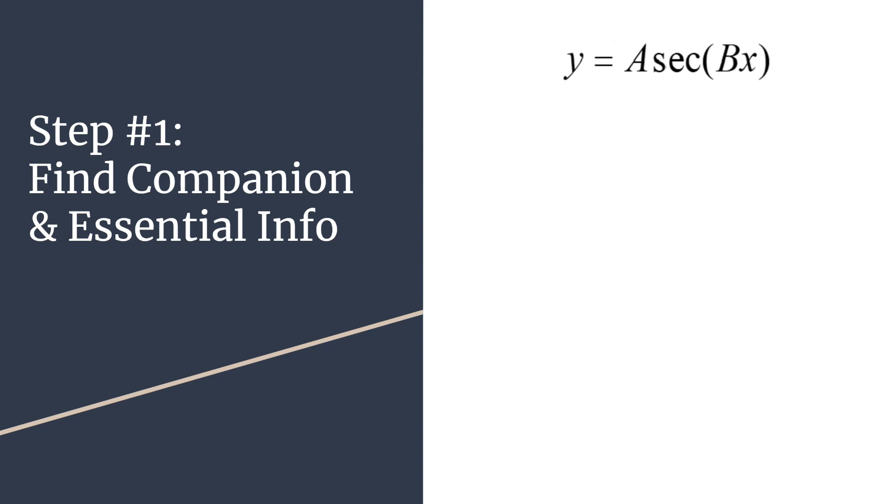So the reciprocal of secant is cosine and all of its essential info. So if you have an equation in this form, so an unshifted secant graph, your companion equation will look almost identical. You'll just replace secant with cosine since that's its reciprocal.